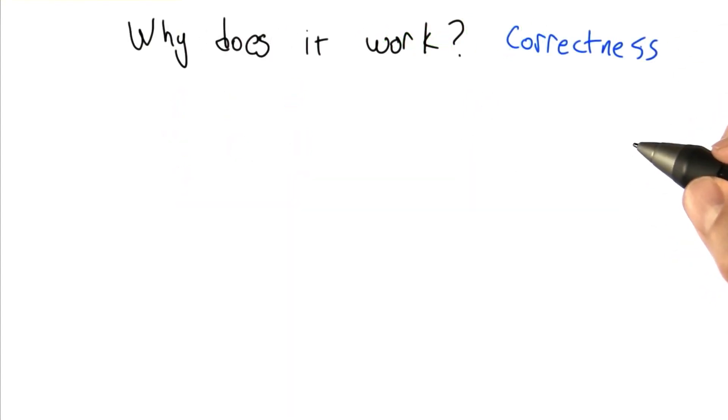Why does this work? We're going to do another proof of correctness, and it turns out that the same strategy we used for naive is going to work out really well here.